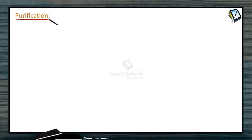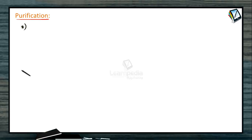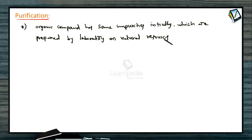Now, what is purification? For the purification of organic compounds we can use many methods, depending upon the nature of the organic compound. What you are getting from the laboratory or natural resources has some impurities. If the organic compound has the ability to dissolve in polar solvents, by using the crystallization process we can easily purify it.